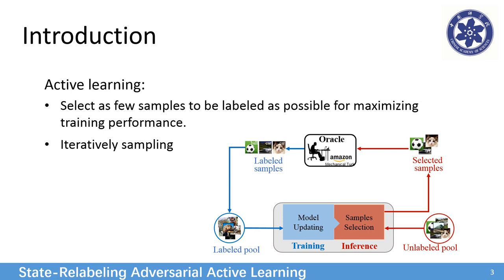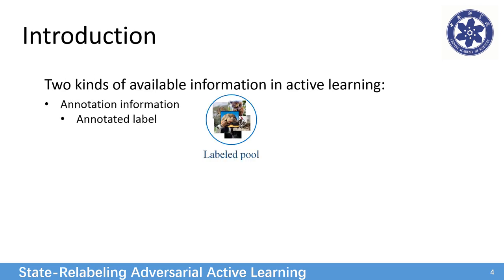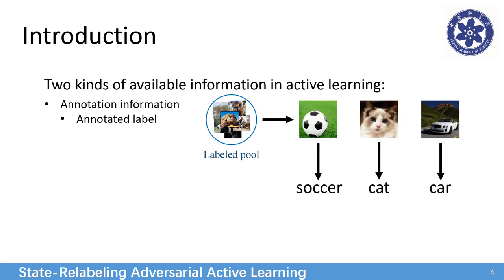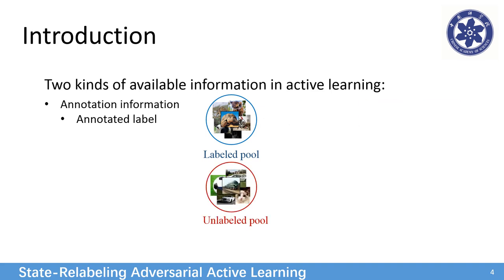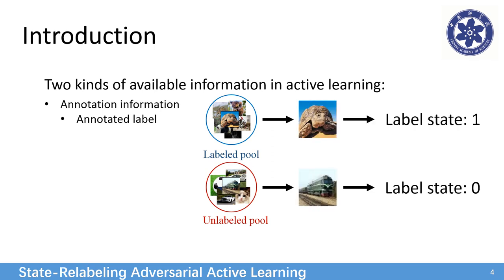It iteratively selects samples from an unlabeled pool and annotates them. There are two kinds of available information in active learning: one is annotation information, that is the annotated label; the other one is data information, that indicates whether a sample is labeled or not.